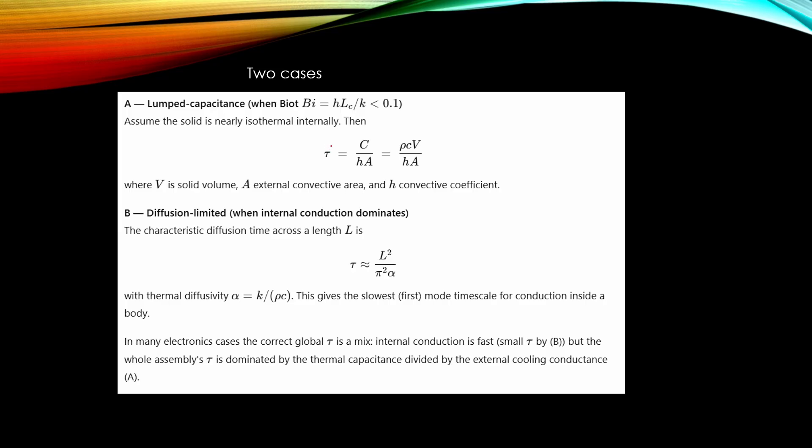And we can calculate this tau from this simple function. But in other cases when this Biot number is high, we need to calculate this tau value from this function. Here this alpha is the thermal diffusivity. In electronic cooling cases and also in other industrial cases, this tau is typically a mix of these two. So in some parts this thermal response can be very fast, but overall it can be very slow.